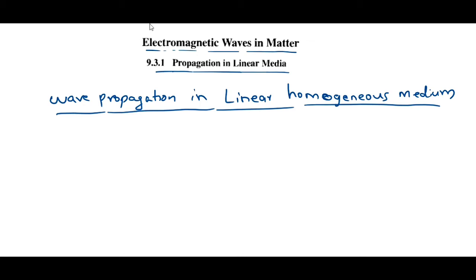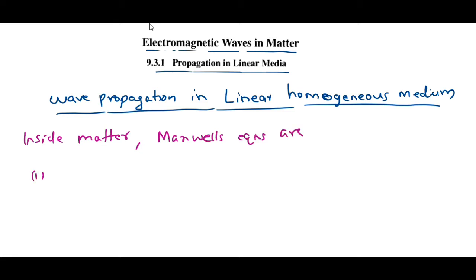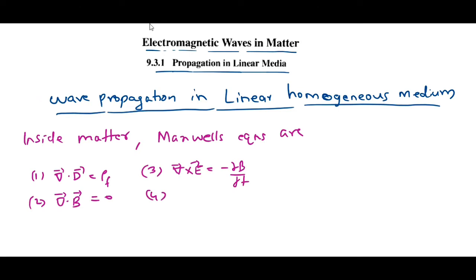Here we have already written Maxwell's equations inside matter. The first equation is ∇·D = ρf (free charge density). The second equation is ∇·B = 0. The third equation is ∇×E = −∂B/∂t. The fourth equation is ∇×H = Jf (free current density) + ∂D/∂t.